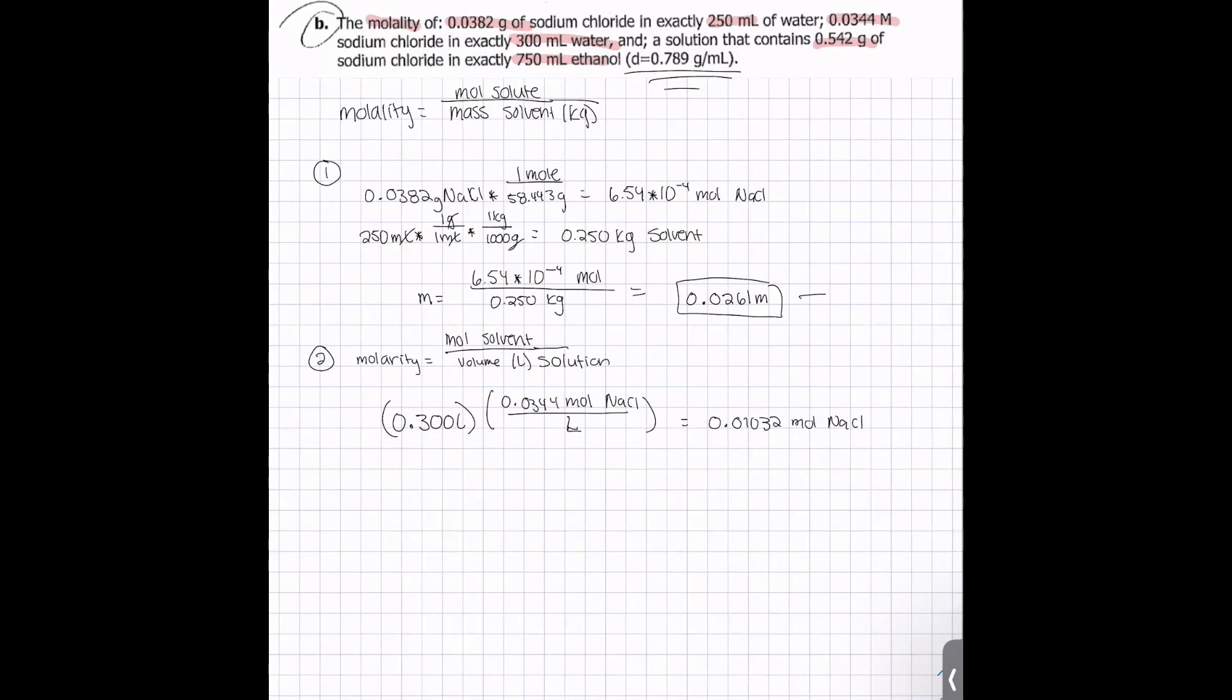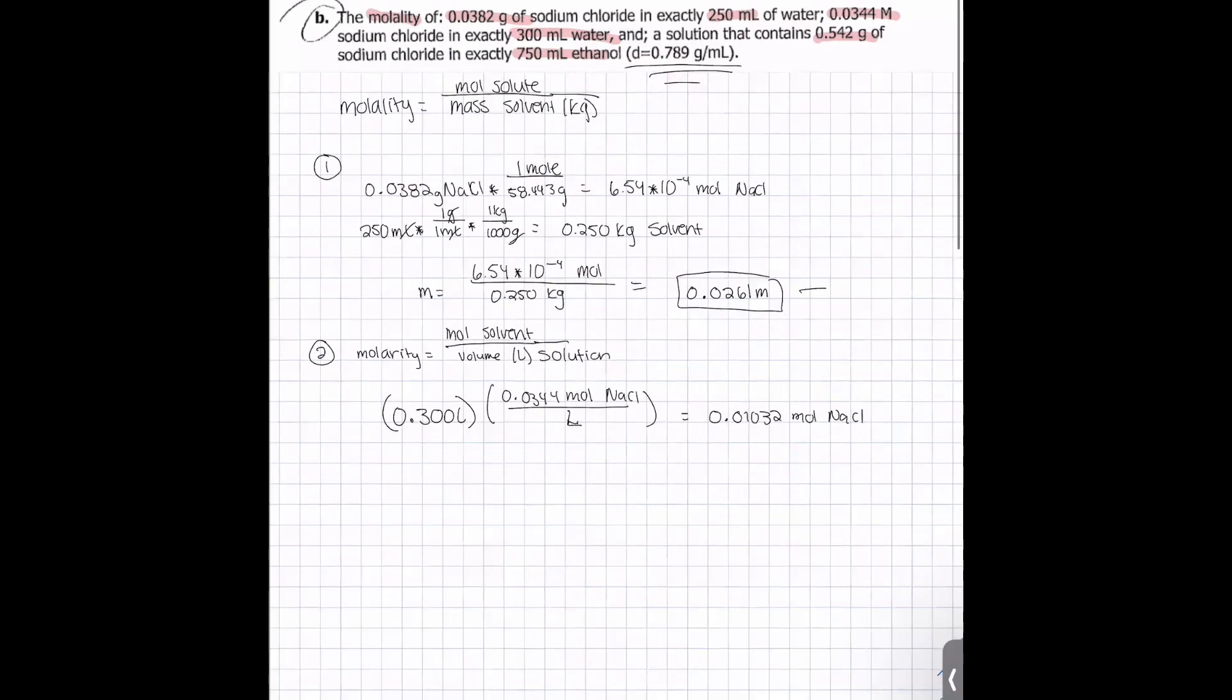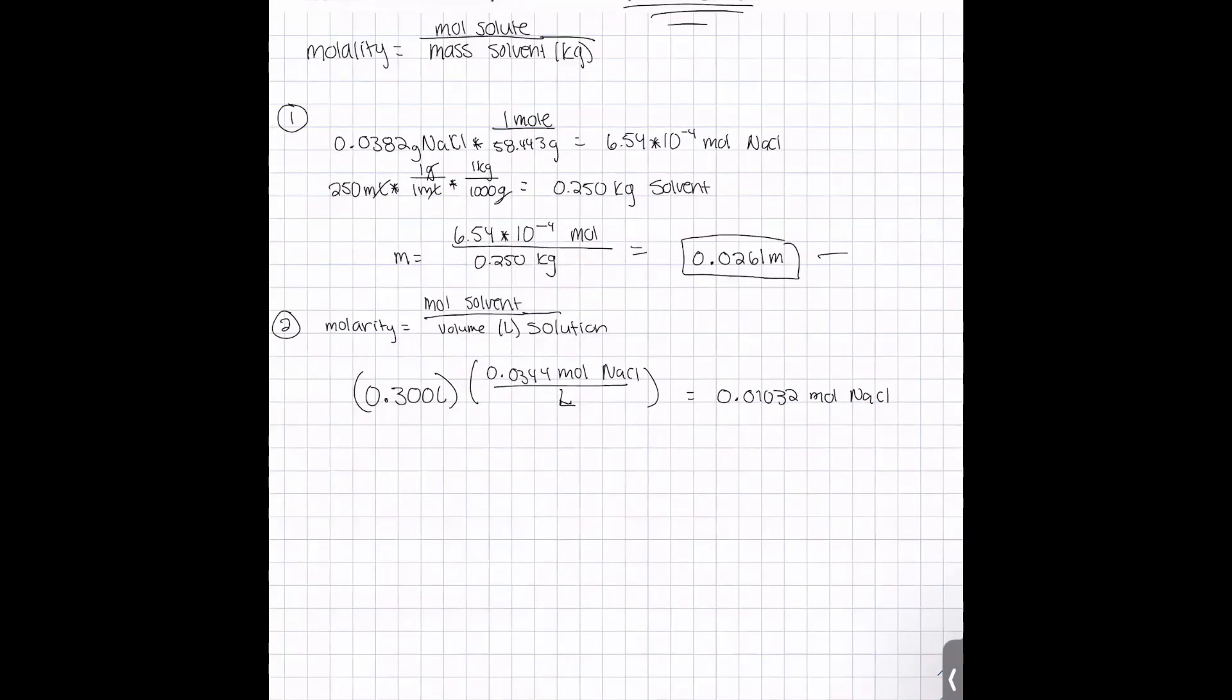Now we have the numerator of our molality equation, and to solve for the denominator, we have to find out the mass of the solvent in kilograms. Similar to last time, we do 300 milliliters of water times the density of water, which is 1 gram equals 1 milliliter, and then we convert from grams to kilograms. That gets us 0.300 kilograms.